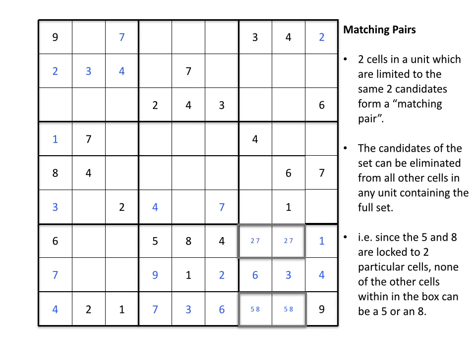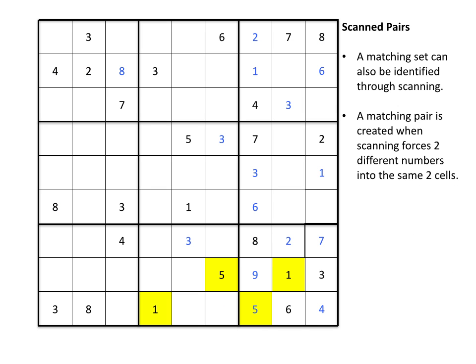So that matching pair was fairly easy to find since it was on a row where those were the only two missing numbers from the row. However, that is not the only way to spot a matching pair. I'm going to use a different intermediate puzzle to show that it is also possible to find a matching pair through scanning.